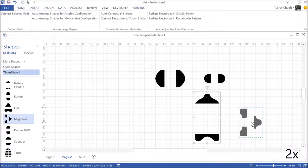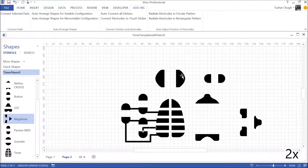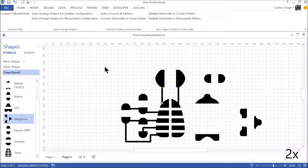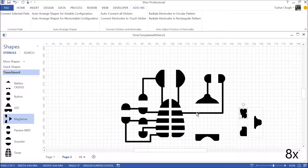We have also built a plugin to automatically place common sub-circuits in their entirety. Everything is wired up using Visio connectors. This is the design for the musical toy.